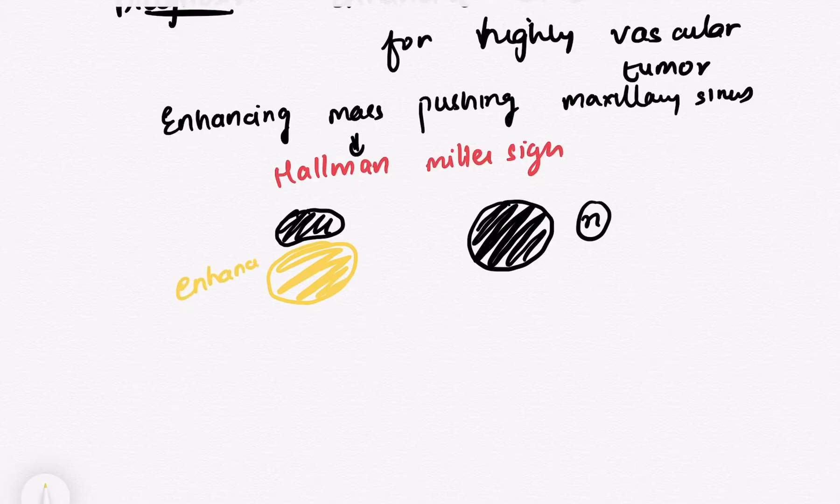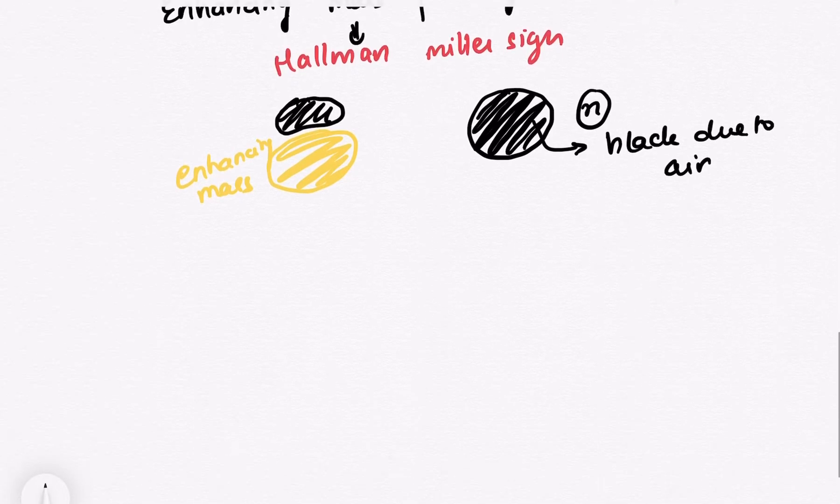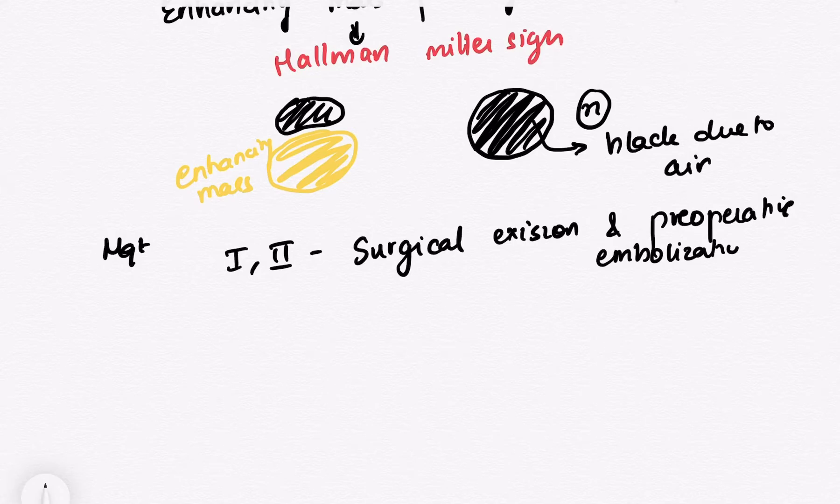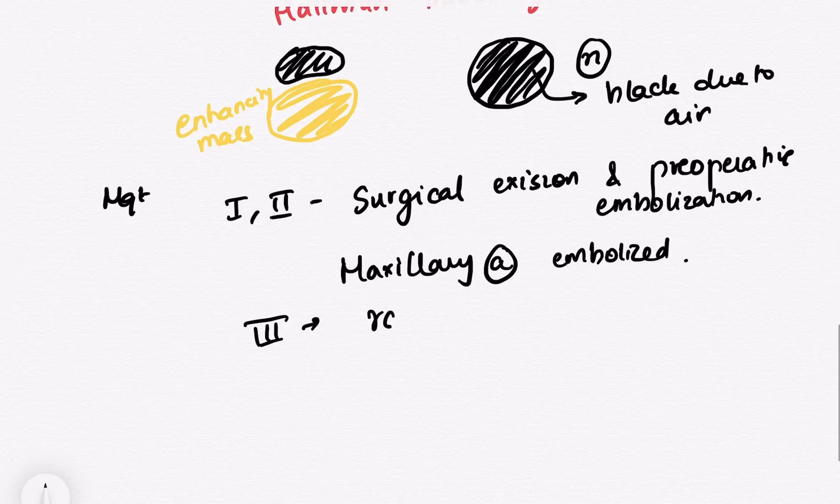So that is how you can know that this is angiofibroma. So management, any stage 1 or 2 will be managed by surgical excision and preoperative embolization. So what you need to do is, what we do is basically the artery supplying the angiofibroma which is the maxillary artery is embolized. So we embolize the artery so that the bleeding does not occur much during the surgery. And then what we do is, we excise the tumor. Now if the stage has reached up to 3, and if the tumor has spread intracranially, then we will prefer not to do surgical excision. And then we will be giving radiotherapy.